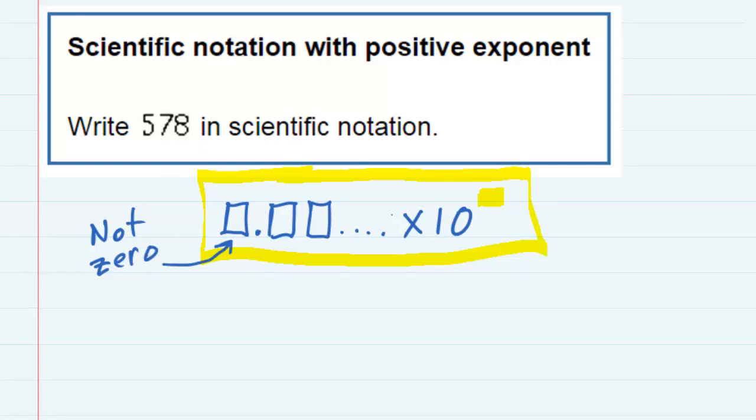When we're looking at our number, 578, if we're trying to put it in scientific notation to make it look like our format here, the decimal would have to go behind the first non-zero number, like here.